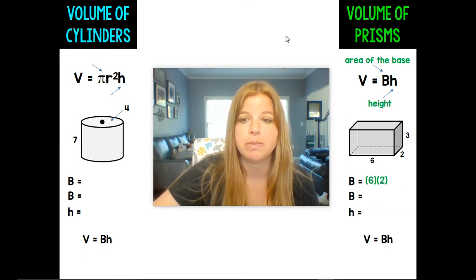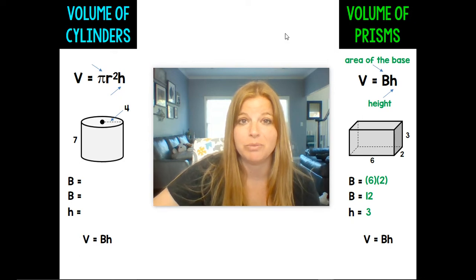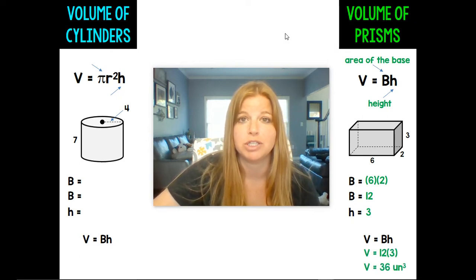So in this rectangular prism, if I was to calculate the base, it would be 6 times 2. I'd get a base of 12. The height of that prism is 3. And simply the volume formula is 12 times 3, which is 36 units cubed.